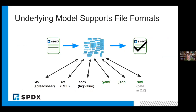SPDX has an underlying model and has had it pretty much since we started. That data model gives us the power to go to all these formats and to transform back and forth between all these different file formats, and also to validate that if someone gives you an SPDX document, it's a valid document. You can go between a spreadsheet and a JSON file with the tooling. That's been very powerful for us in the SPDX community, and we're sticking with making sure we always have an underlying model.